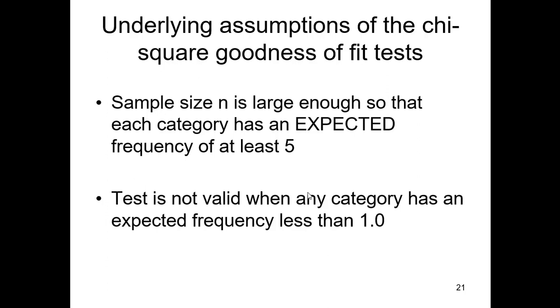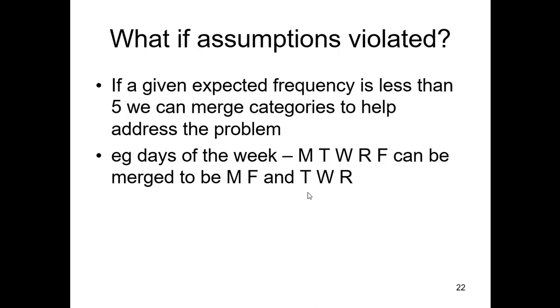A couple of things that we need to keep in mind when we do these chi-squared goodness-to-fit tests is the sample size has to be large enough so that each category has an expected frequency of at least 5, i.e. E1 or E2 or E3 or E4, whatever, is at least 5. The test is not valued in any category, has an expected frequency less than 1. So we prefer at least 5. We must have at least 1. What happens if we don't have 5? Well, we'll merge categories.